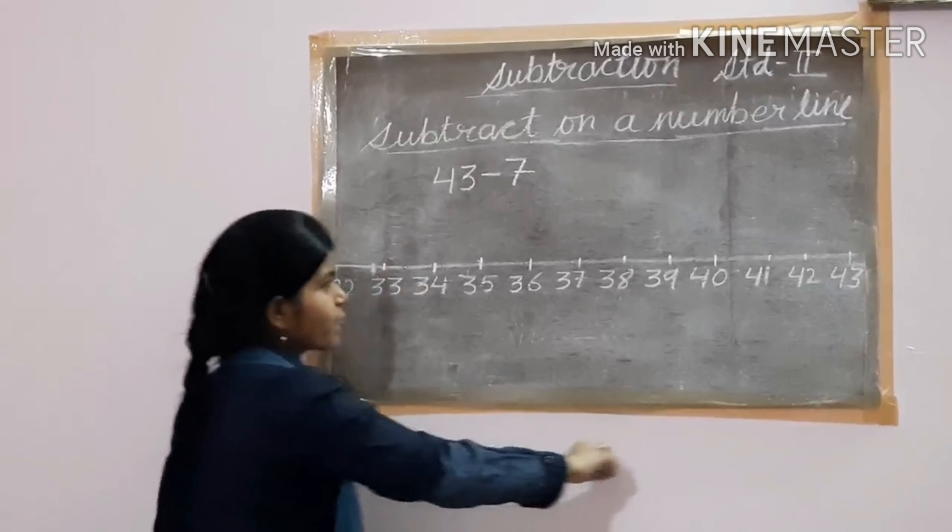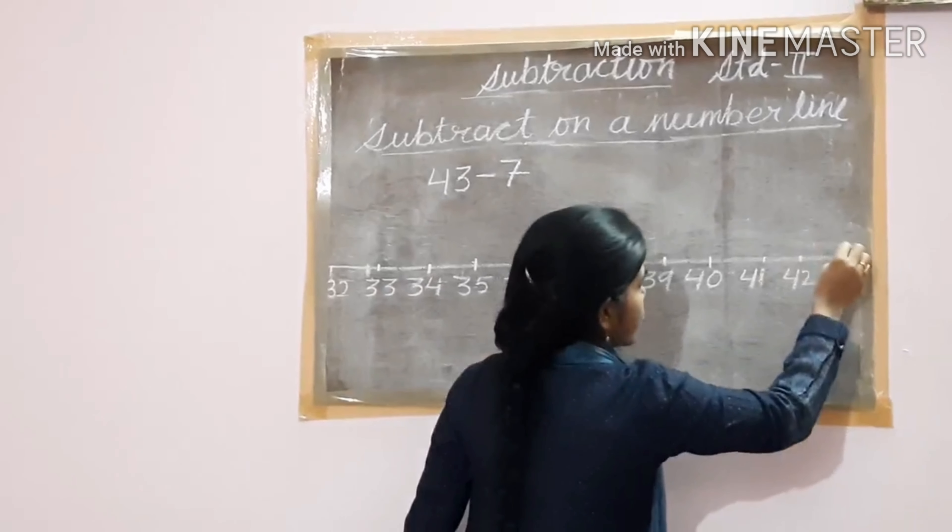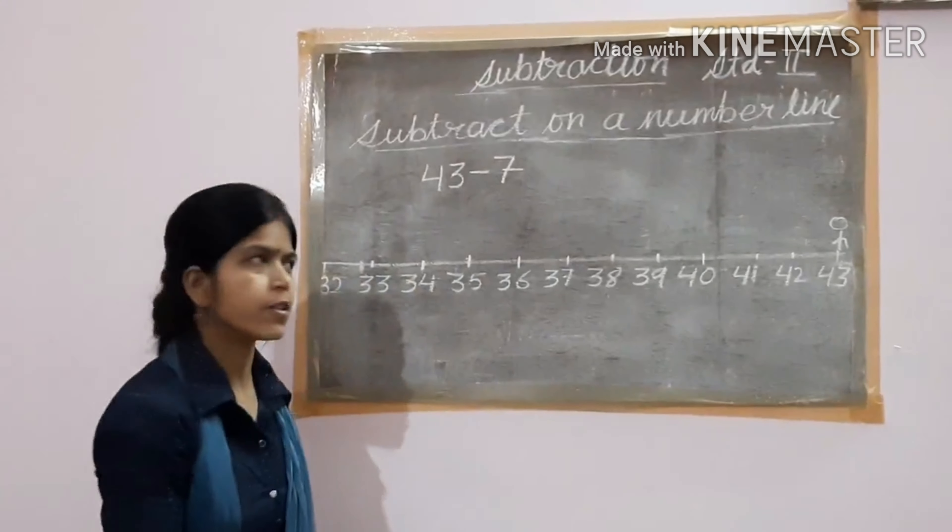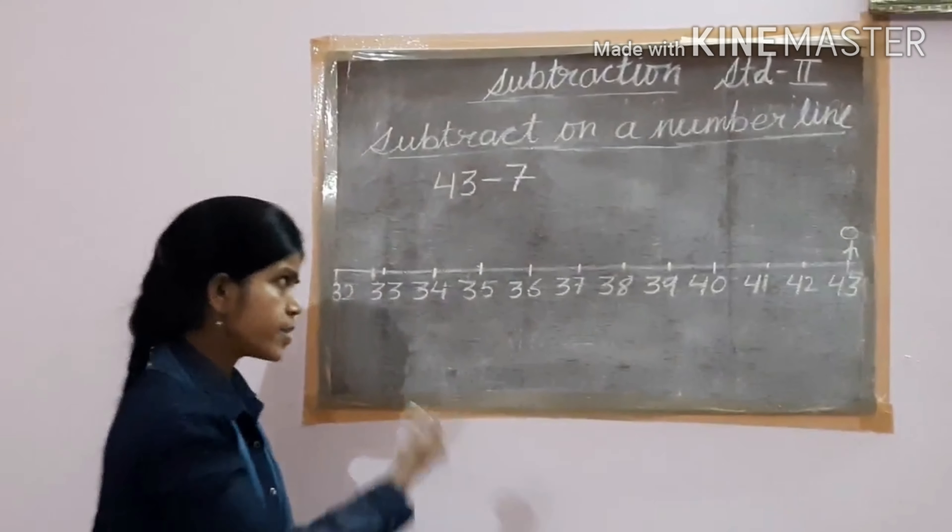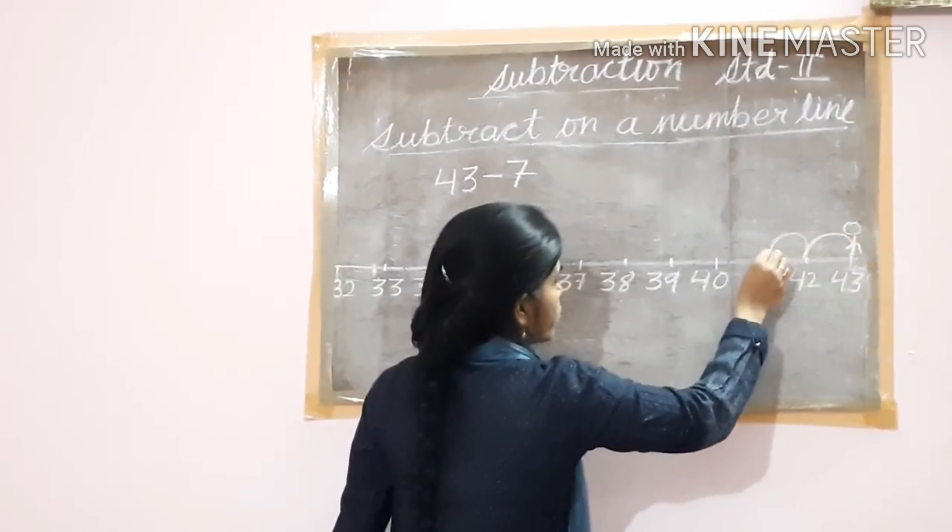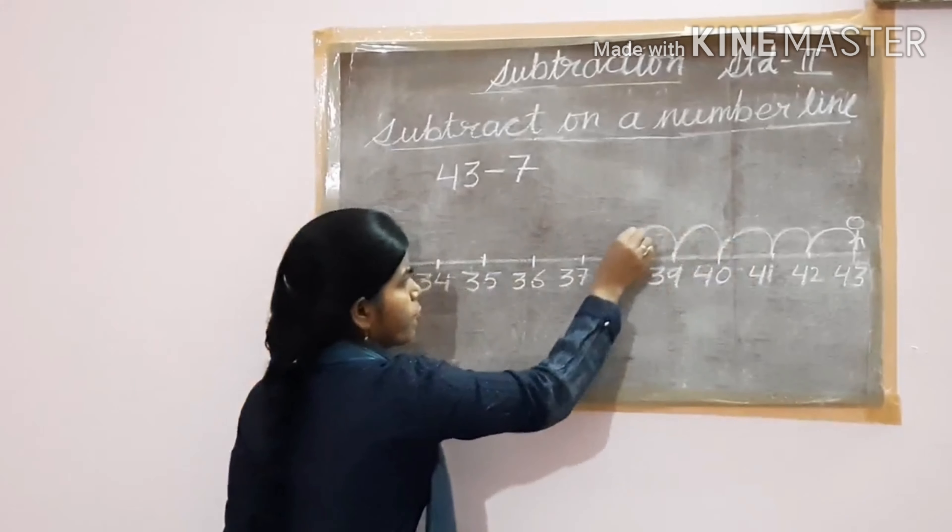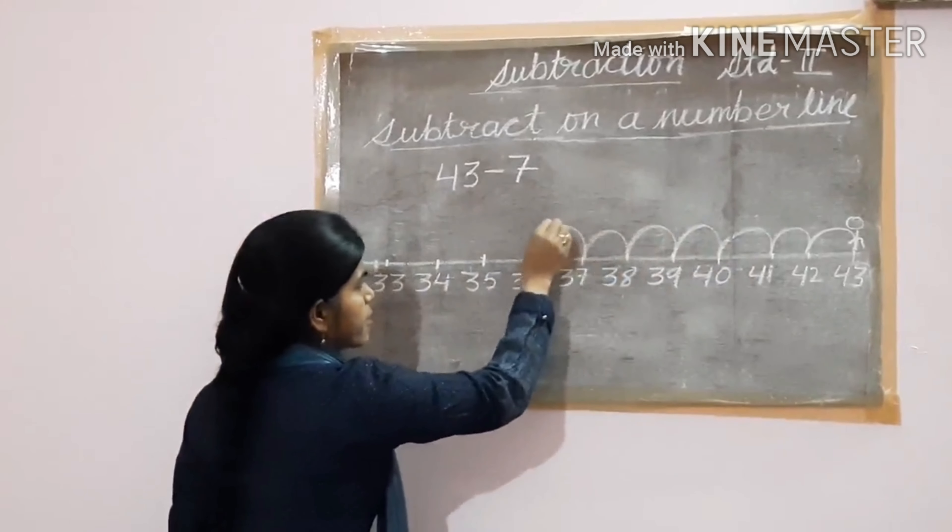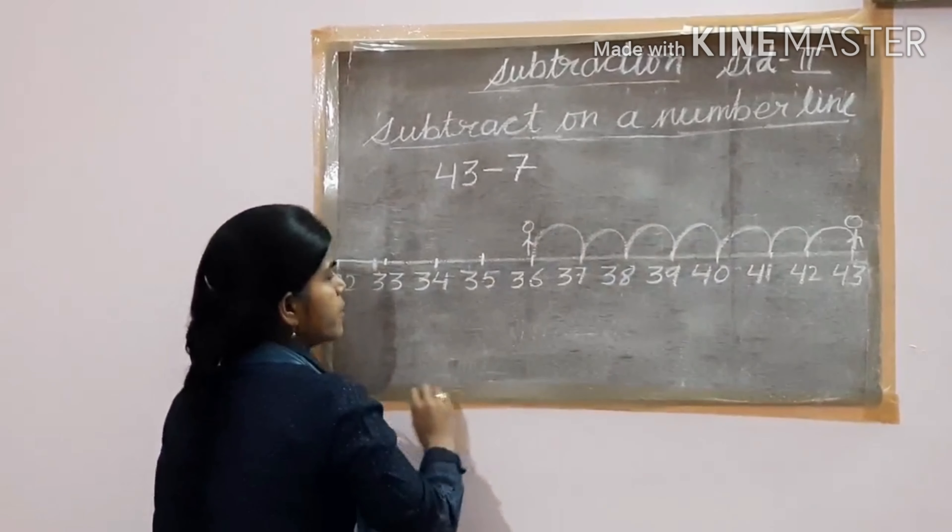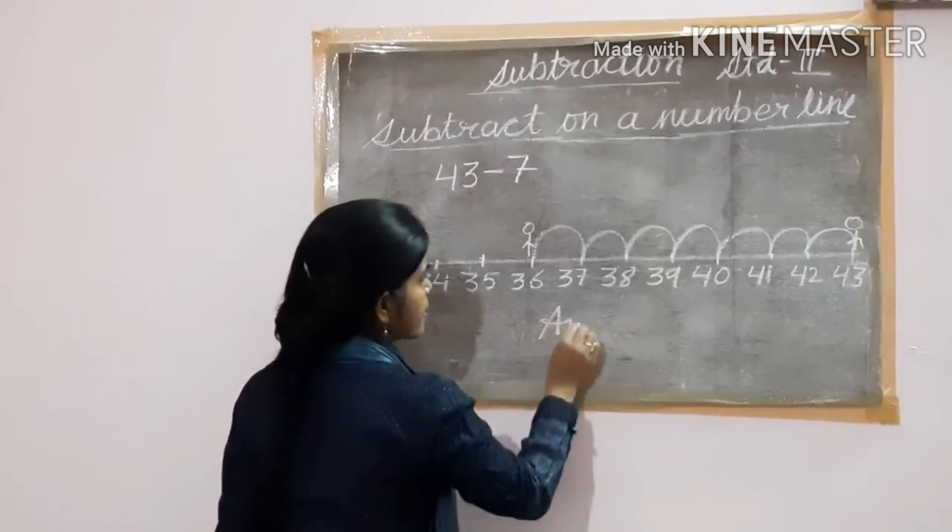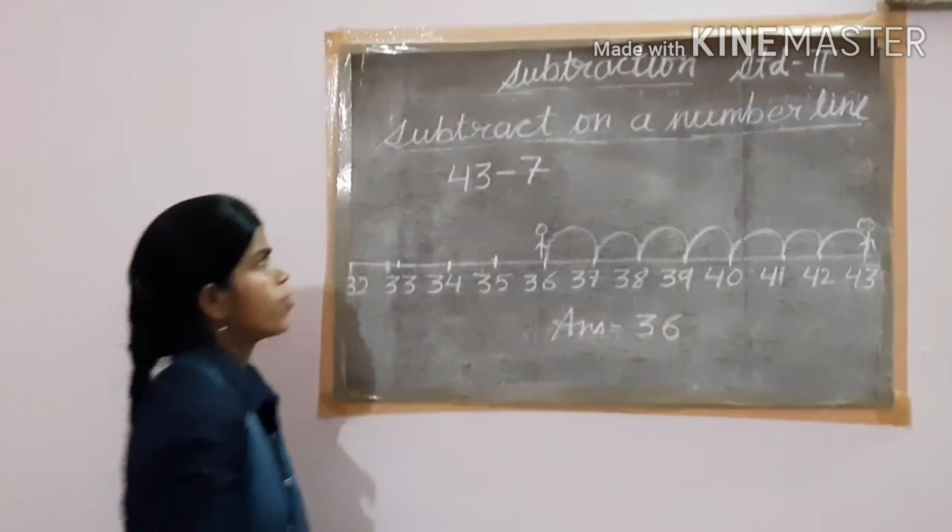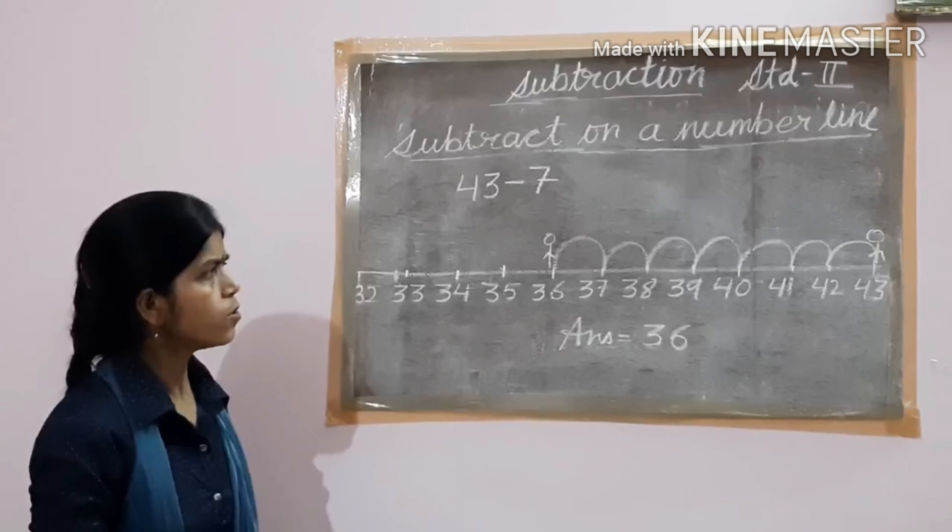Now the bigger number is 43, so you have to start from the number 43. Now the smaller number is 7, so you count 7 steps back from here: 1, 2, 3, 4, 5, 6, 7. Now we are at number 36. So the answer is 36. 43 minus 7 is equal to 36.